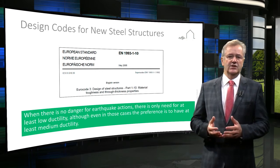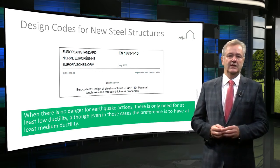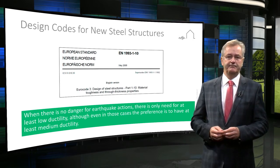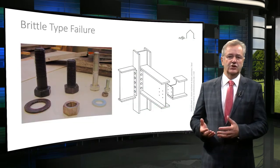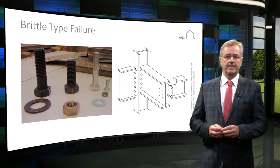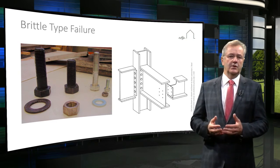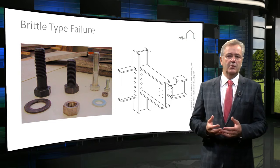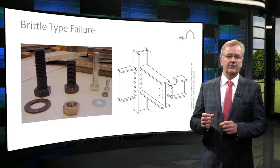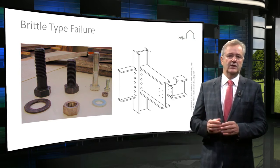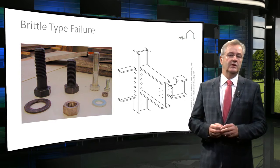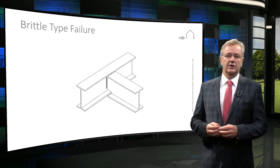When there is no danger of earthquake actions, there is only need for at least low ductility, although even in those cases the preference is to have at least medium ductility. If in a connection the bolts in tension or in shear are decisive for the resistance, this structure will exhibit a brittle type of behavior — not really brittle behavior, because this is prevented by the selection of the appropriate steel material. If the plastic strains are confined in small areas with little deformation lengths, the strains reach rather quickly the ultimate tensile strain and the material will break while the structure still shows small deformations. This is so-called brittle type failure.